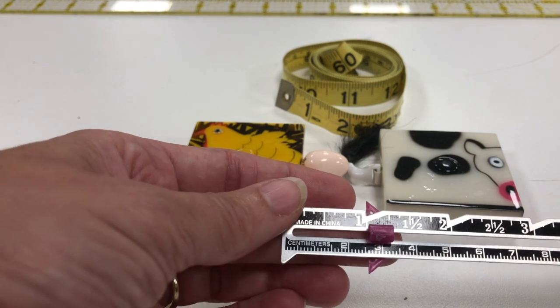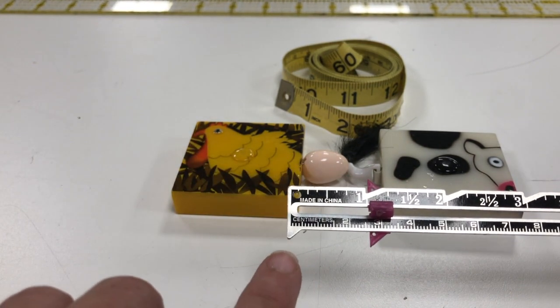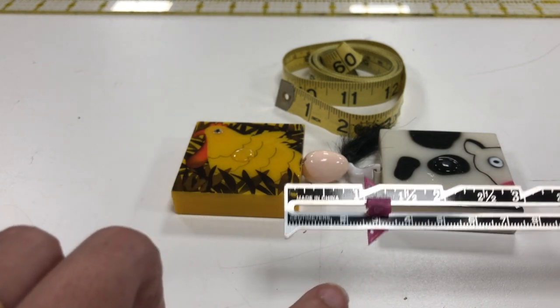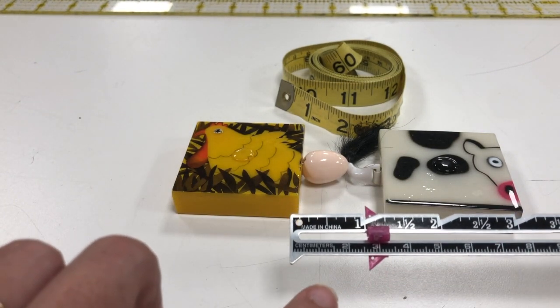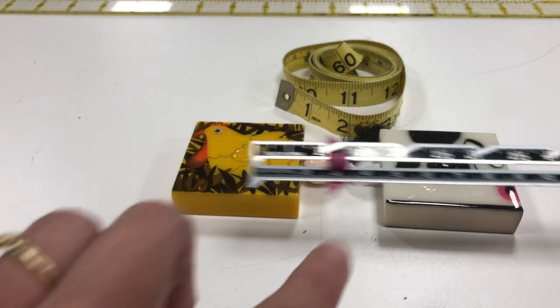So if I put that one at one inch for example, then I see these two points right here, then I can measure like buttonholes on the front of a shirt that are exactly the same measurement by using the seam gauge.